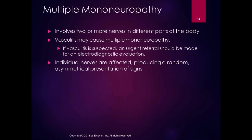Multiple mononeuropathies involve two or more nerves in different parts of the body. Vasculitis might cause multiple mononeuropathy — if you suspect vasculitis, refer the patient to a neurologist for further evaluation. Individual nerves are affected in a random, asymmetrical presentation, often due to an inflammatory process.